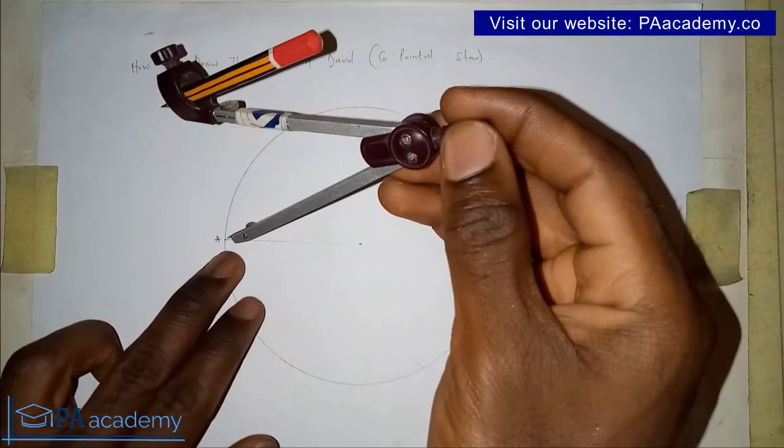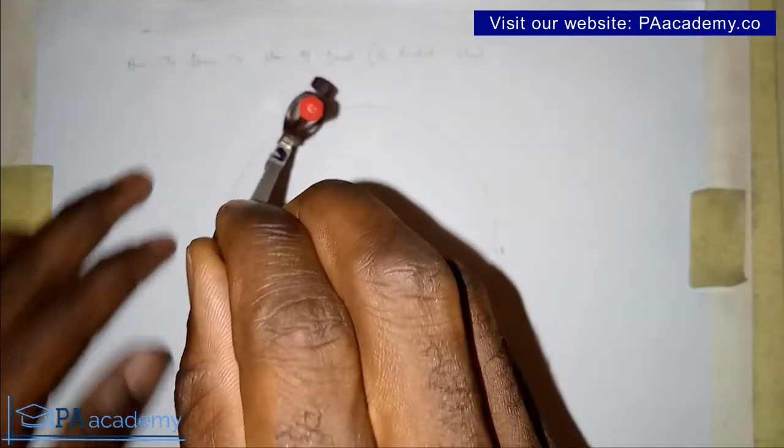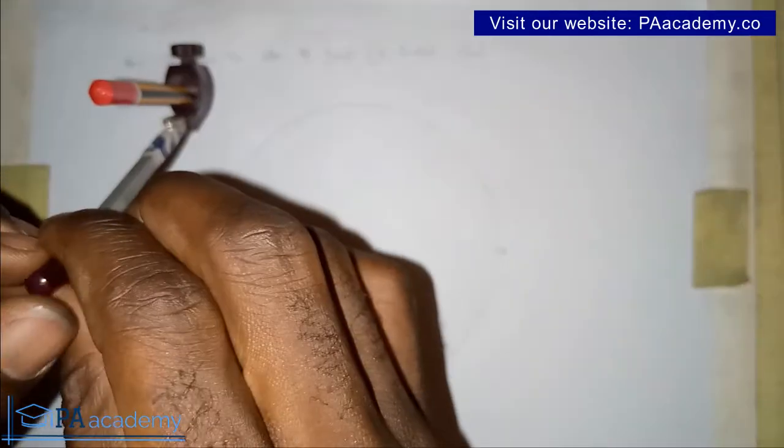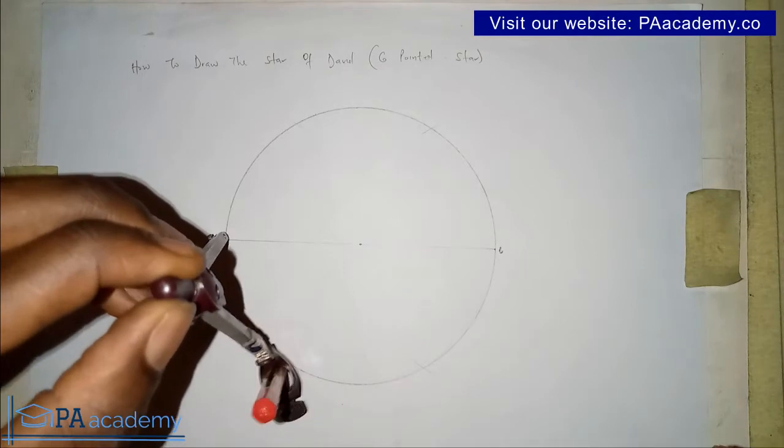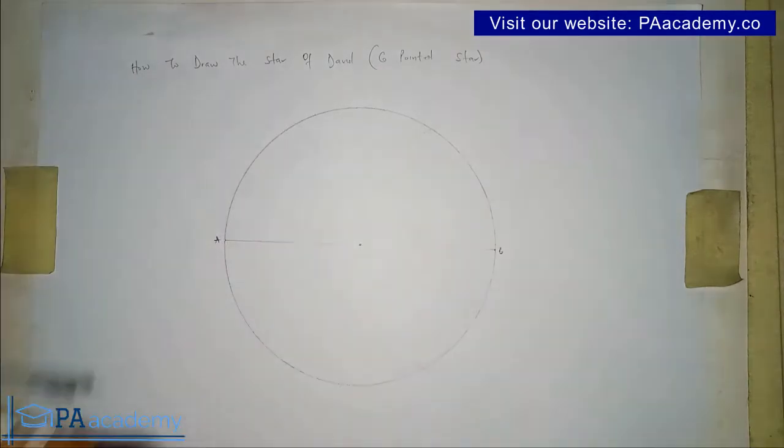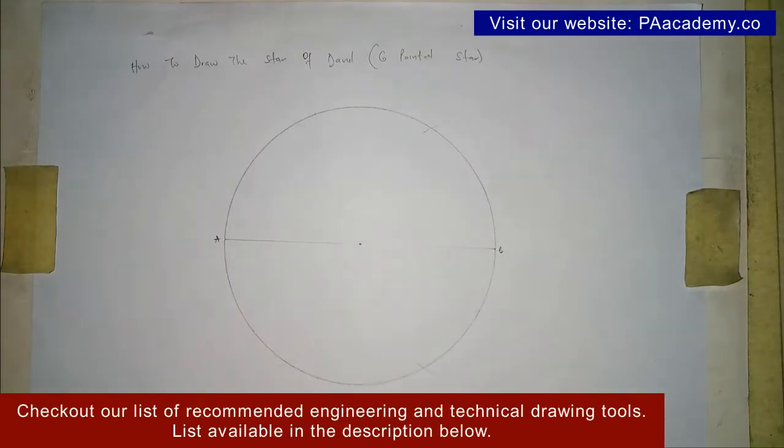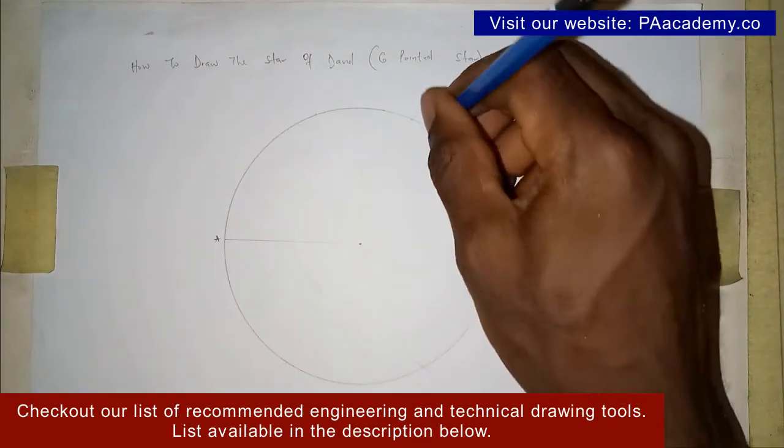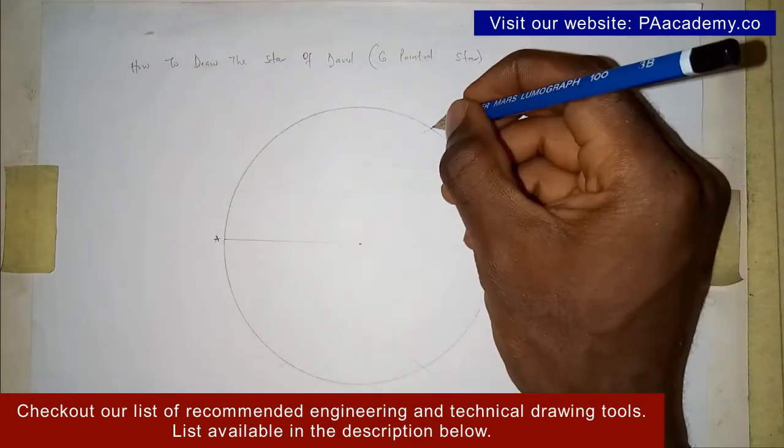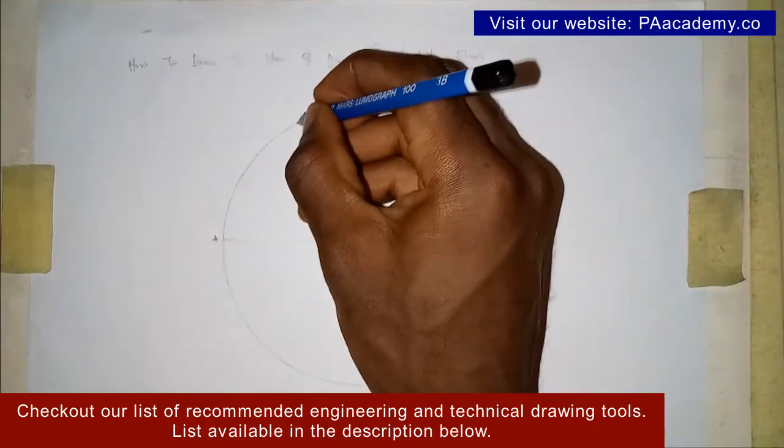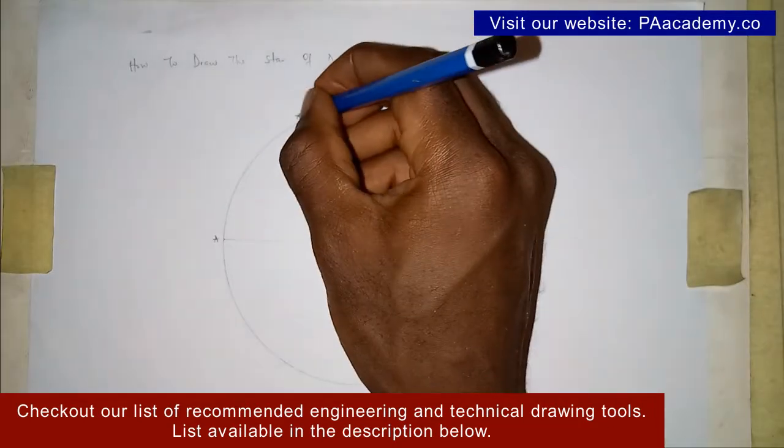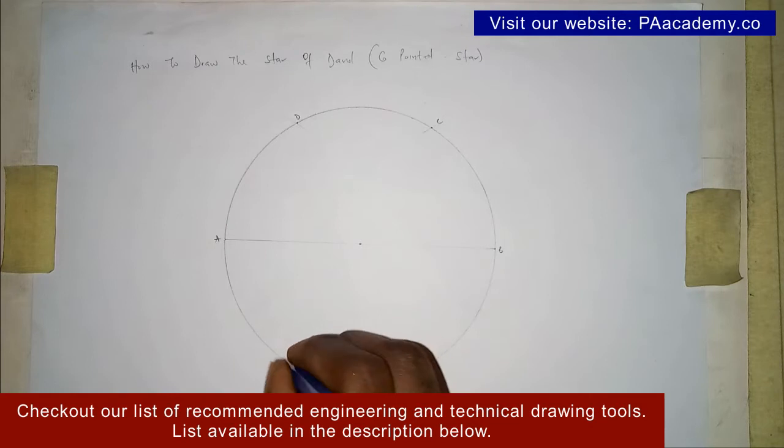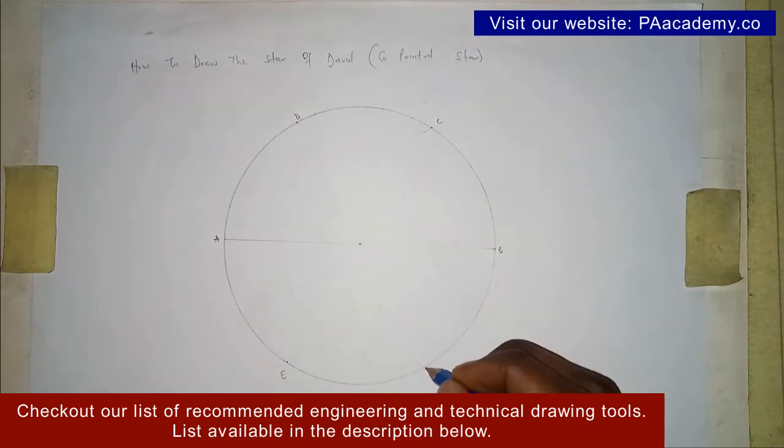With the same length, you go to point A. You draw an arc. On the second half of the circle, you also draw an arc. Now the next thing is to note those points where the arc is touching the circumference of the circle. Let's call this point C. Then let's call this point D. Let's call this point E. And then let's call this point F.